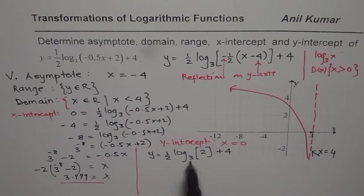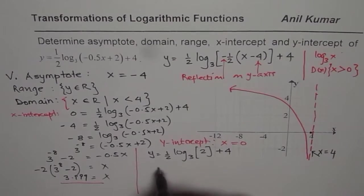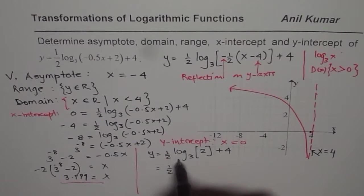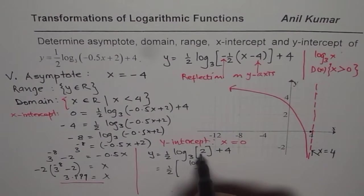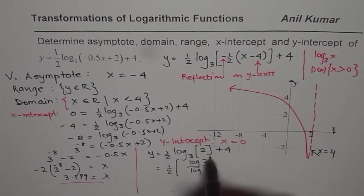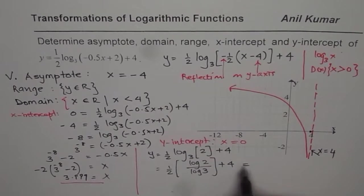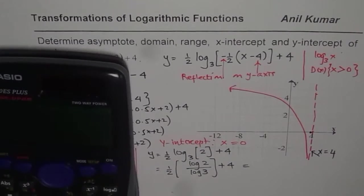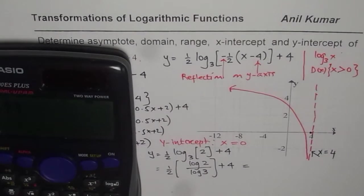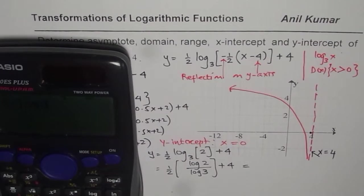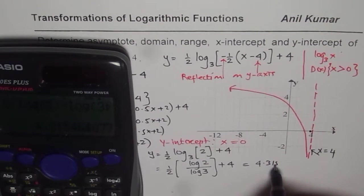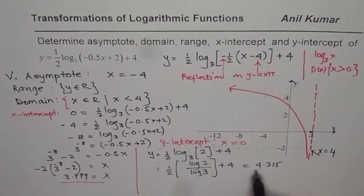How are you going to calculate log base 3 of 2? We need to change the base. So we will do half of, and let me write it in brackets, log of 2 divided by log of 3. That is how you calculate this value, plus 4. Let us do it. So 0.5 within brackets, log of 2, bracket close, divided by log of 3, bracket close, bracket close, plus 4, equals... so we get a value which is 4.315. So the y-intercept is 4.315.